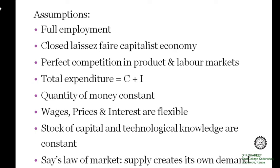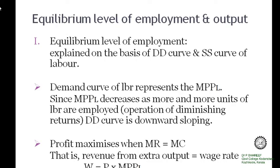Wage, price, and interest rates are flexible. Then, stock of capital and technology are constant. Another assumption is Say's Law of Market, which implies supply creates its own demand. Now, based on these assumptions, classical economics explains their theory with regard to the determination of output and employment in the economy.